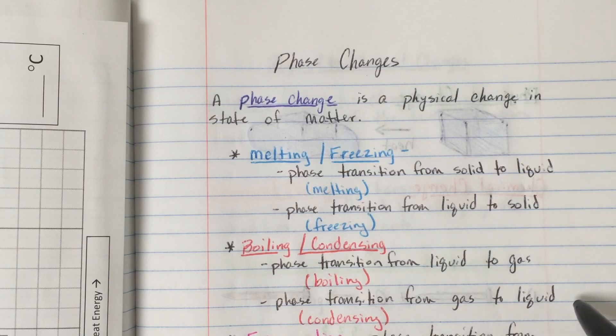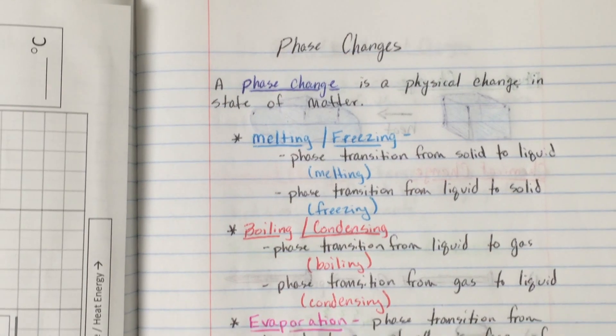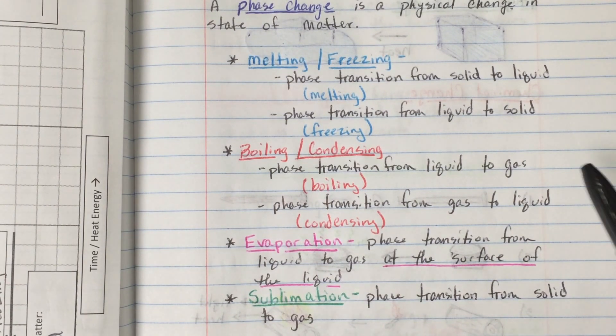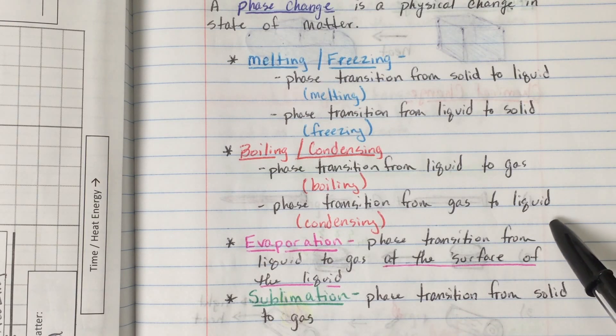Next we have boiling and condensing. Boiling and condensing are both phase transitions between the liquid and gas phases. Boiling is when a liquid transitions to the gas phase, and condensing is whenever a gas cools down to the liquid phase.